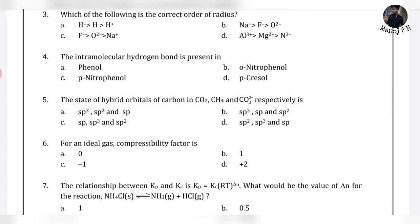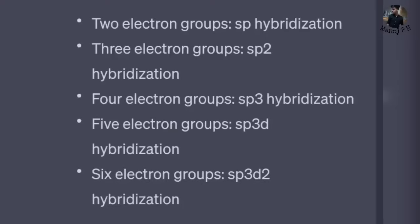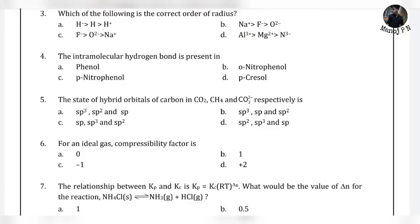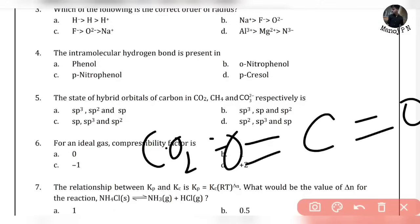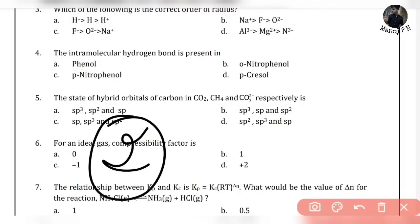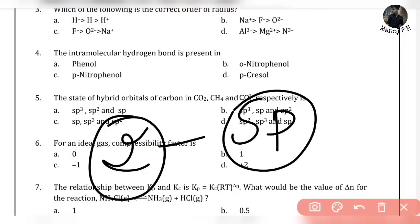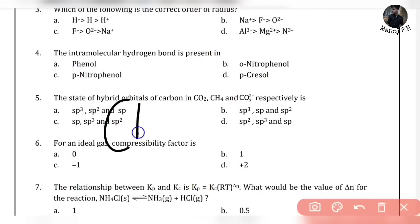Next question on hybridization. We need to count the electron groups. For 5 electron groups: SP3D hybridization. For 6 electron groups: SP3D2 hybridization. Now for CO2 — CO2 structure has 2 electron groups, so it is SP hybridization. For CH4 — 4 electron groups — SP3 hybridization. Option C. Simple.